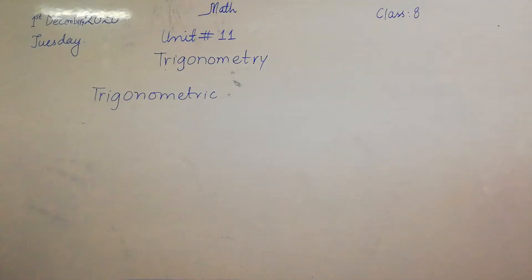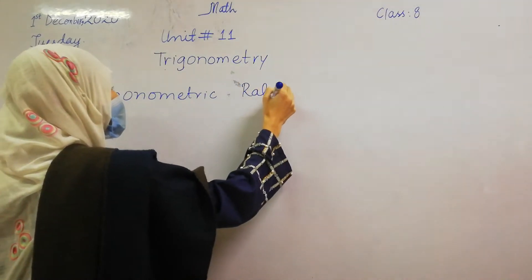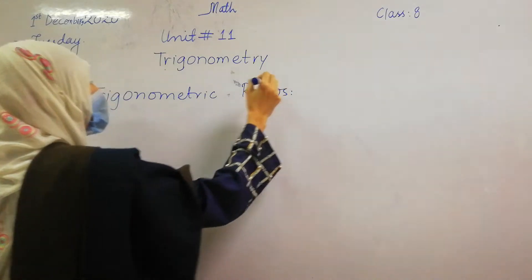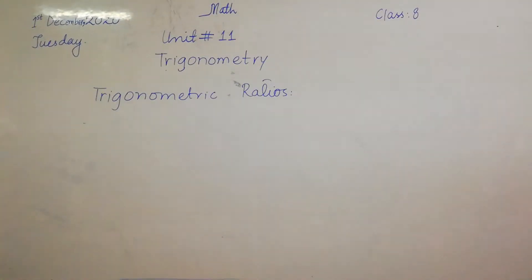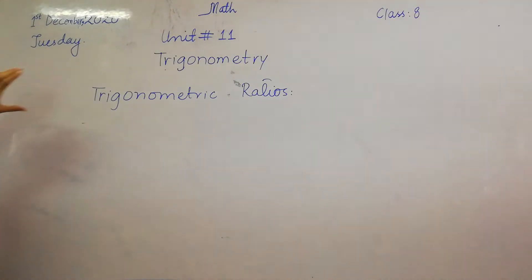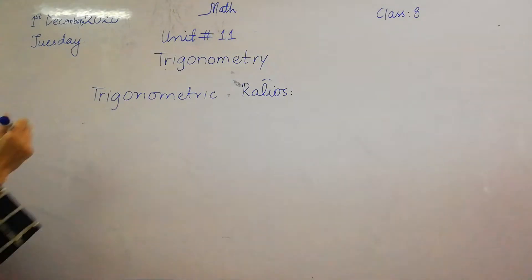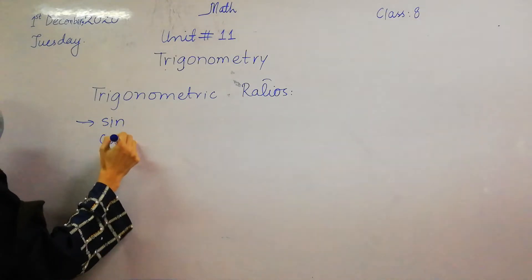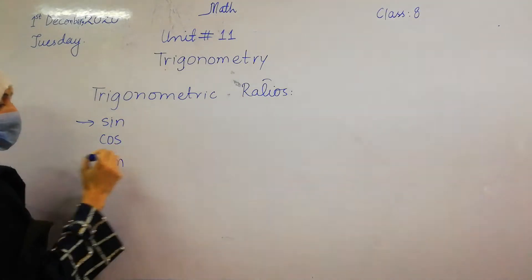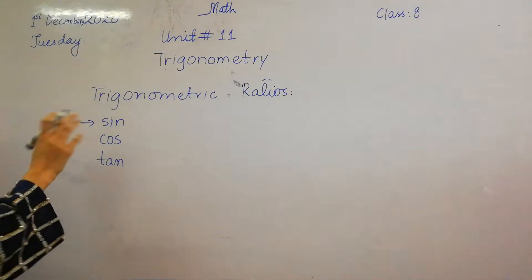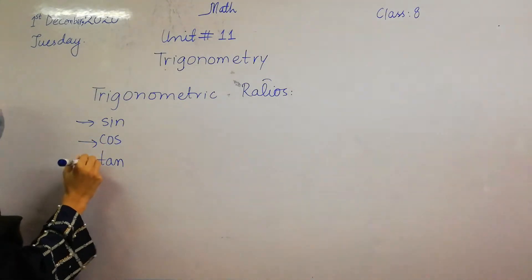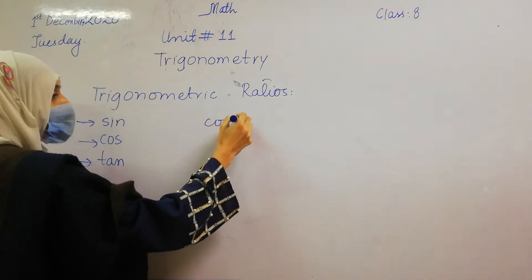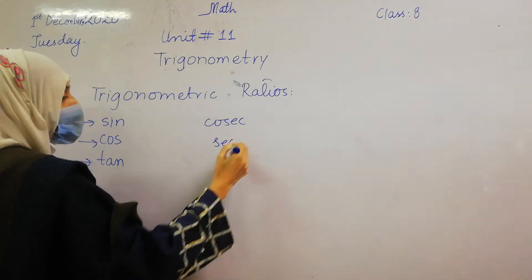Trigonometry is used to find the solution of a triangle. And solution of triangle means to find the angles and sides. The trigonometric ratios we have are sin, cos, and tan. And the reciprocals of these three ratios are cosecant, secant, and cot.